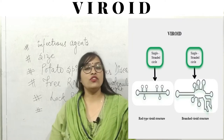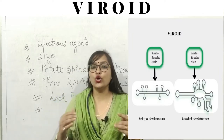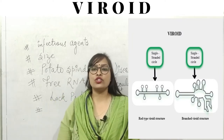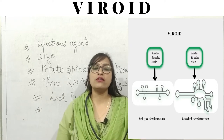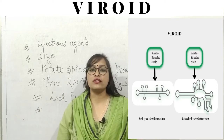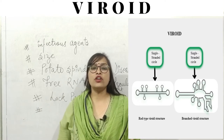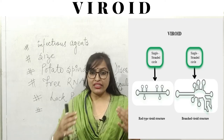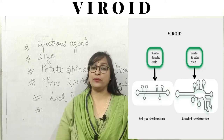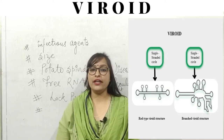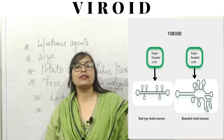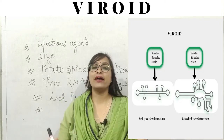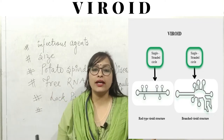In 1971, Theodore Diener, a pathologist working at the agricultural research services, discovered an acellular particle that he named a viroid, meaning virus-like.